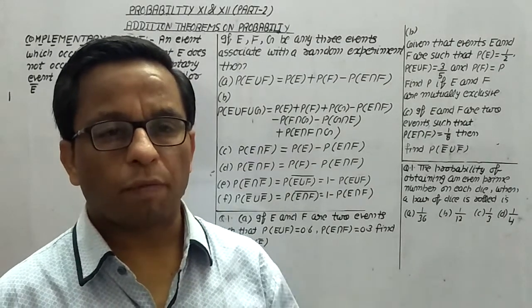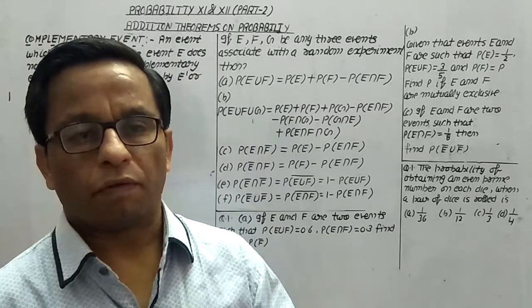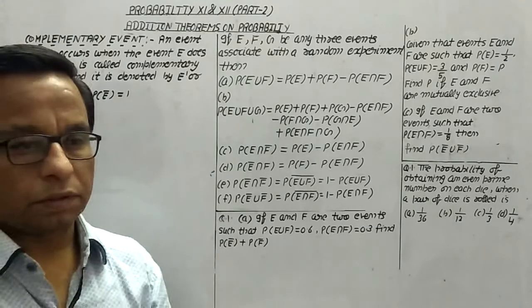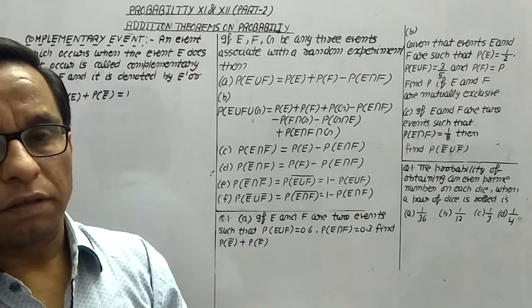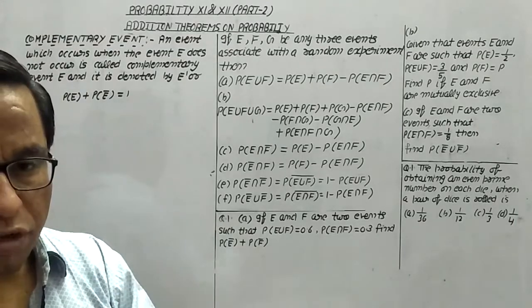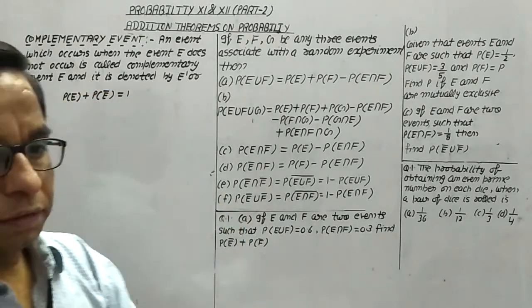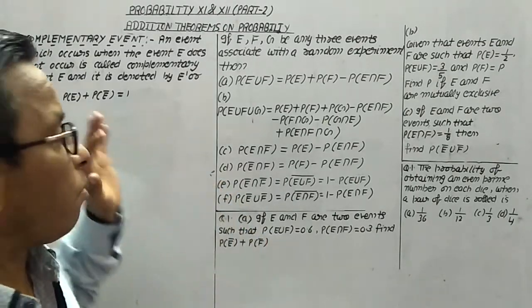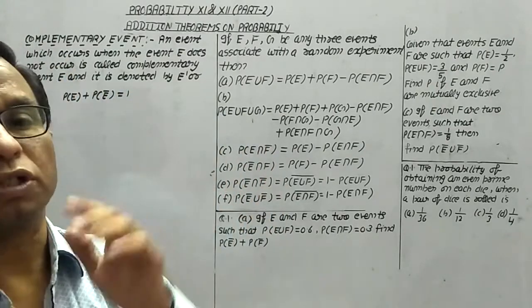Hello everyone. In this part 2 of probability, we will discuss about the addition theorems on probability. First of all, we will discuss a very important point — the complementary event. An event which occurs when event E does not occur is known as the complementary event of E, and it is denoted by E dash or E bar. The probability of E plus the probability of E not happening always equals 1. This is a very important relation to solve questions.